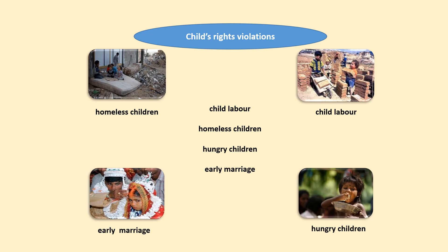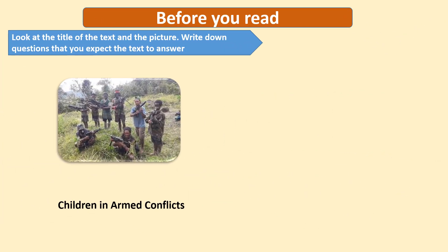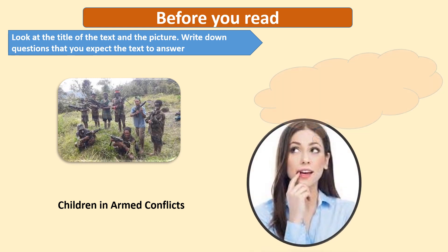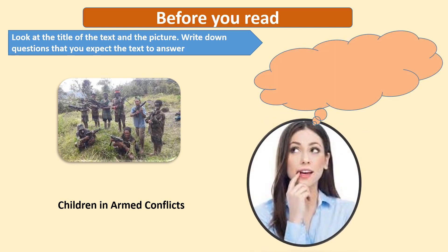Now let's move on to the next task: Before You Read. I'd like you to look at the title of the text and the picture and write down questions that you expect the text to answer. Your questions must be as open as possible because they are only guides to facilitate interaction with the text and make your reading purposeful and more effective. Your questions can be as follows: Why are these children soldiers? What can happen to them? How can they be helped?